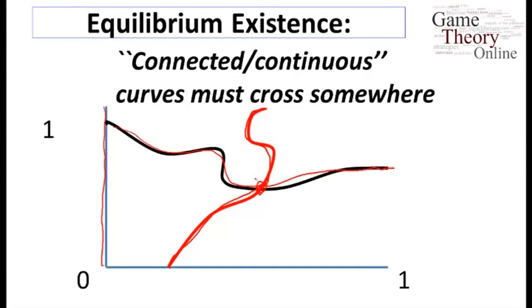So generally, what we need is just a point where both are on their best response correspondences. Generally, there's a theorem that would tell us that as long as these curves are connected, we're going to have to have an intersection. The general version of that theorem says that if the best response correspondences are nicely behaved in terms of having this connected structure and we're working in a nice space, then there's going to be a point where we're on everybody's best response correspondence at the same time. So we end up then with a nice conclusion that there always exists at least one equilibrium. It might be mixed, it might be pure, but there's always at least one. There could be more, but there's always at least one.